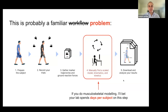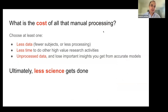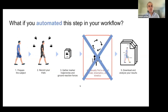That manual processing is a huge drain on the resources of your lab. What is the cost of model scaling? You can choose how you pay this cost, but you have to pick at least one: either you have less data in your study — fewer subjects or less processing — or you have less time to do other high-value research activities like writing grants, training students, and coming up with creative new ideas. Or you just don't process your data and lose access to important insights from accurate musculoskeletal models. Whatever you choose, less science gets done.